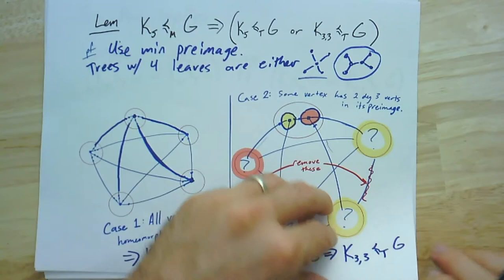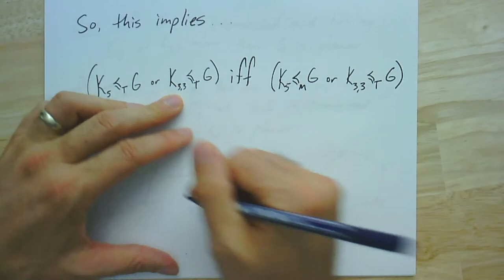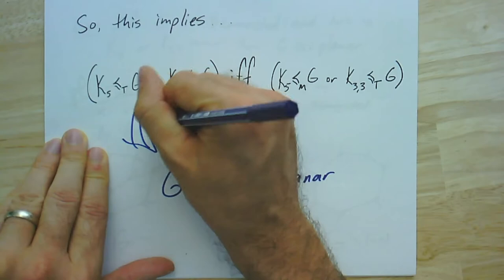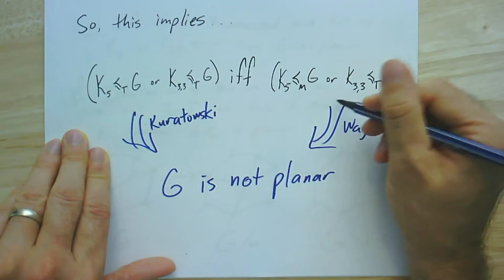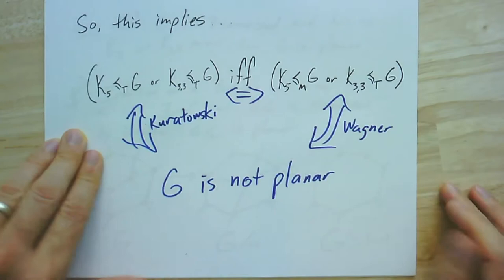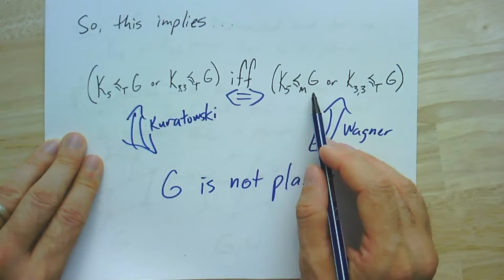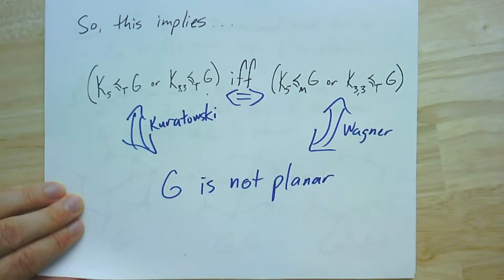This implies we can look at these two conditions — the conditions for being non-planar in our two theorems. If you have a K5 or K3,3 topological minor, Kuratowski says the graph is not planar; if you have the minor, Wagner says it's not planar. All three conditions are equivalent. So it suffices to just prove one of the two theorems.